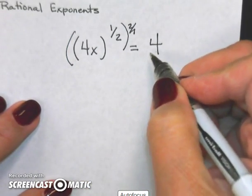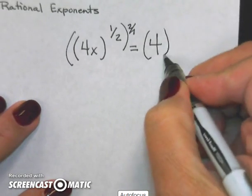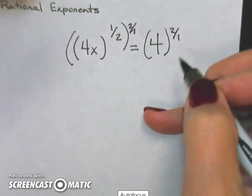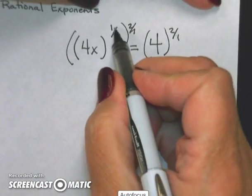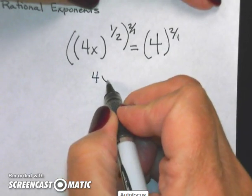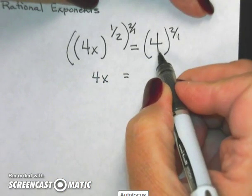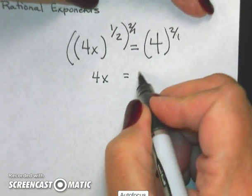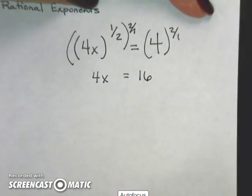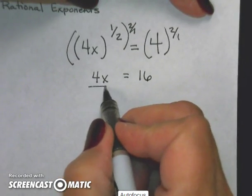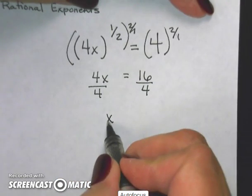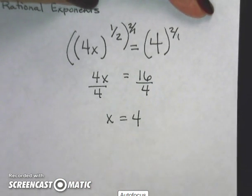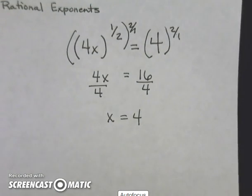Again, if I do it to the left side, I must do it to the right. My powers will then cancel out and I'm left with 4x is equal to 4 squared, which is 16. Now I need to finish solving this, so I will divide by 4 and x equals 4. Again, I have solved my equation.